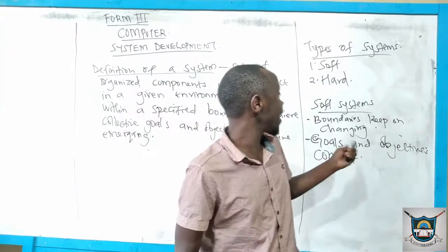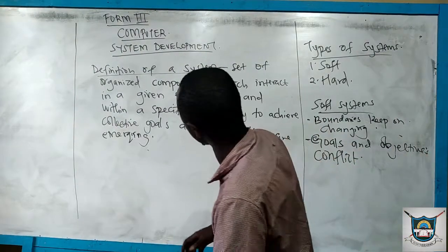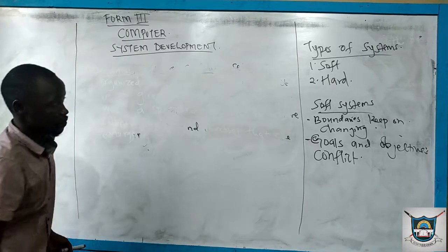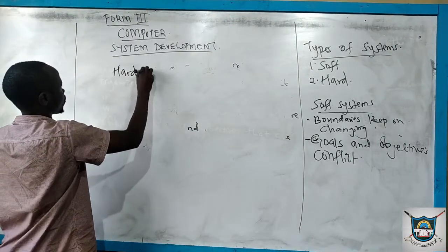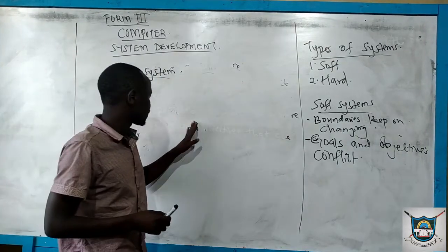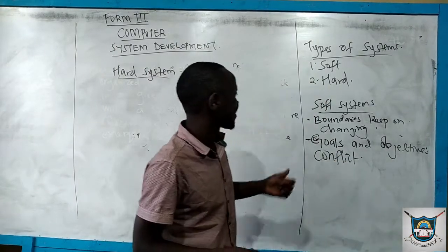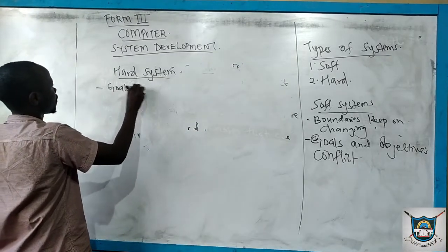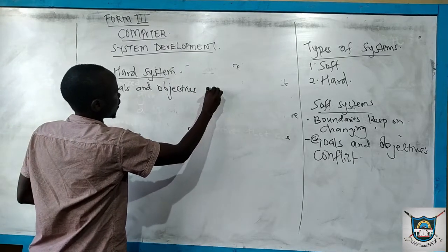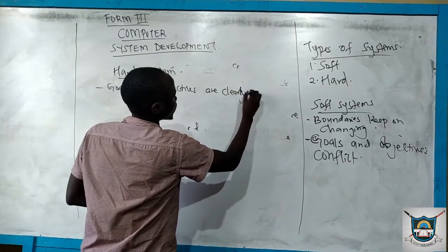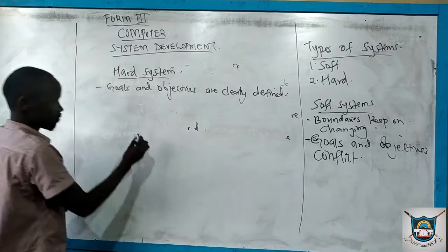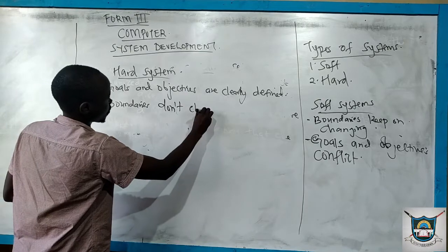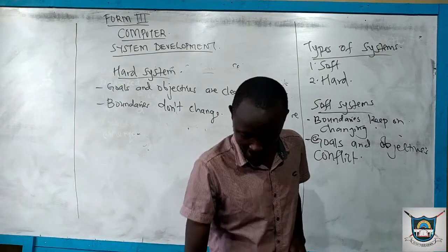We have the hard system. The hard system is the opposite of the soft system. Being the opposite means you can clearly tell the goals and objectives — they are not conflicting. The goals and objectives are clear and defined. Also, the boundaries don't change. So that is the hard system.